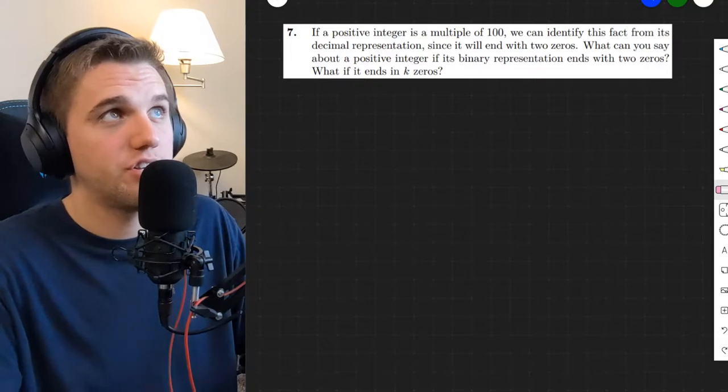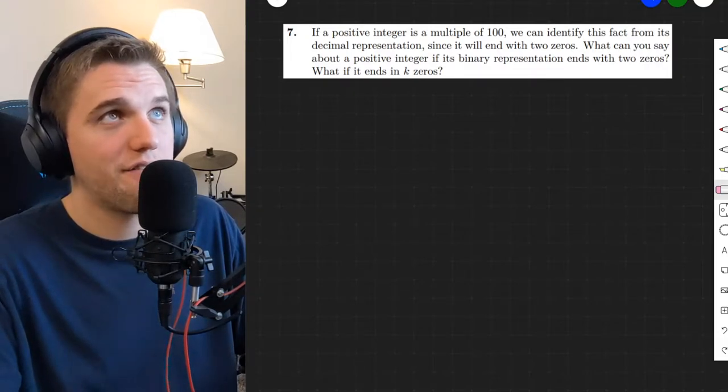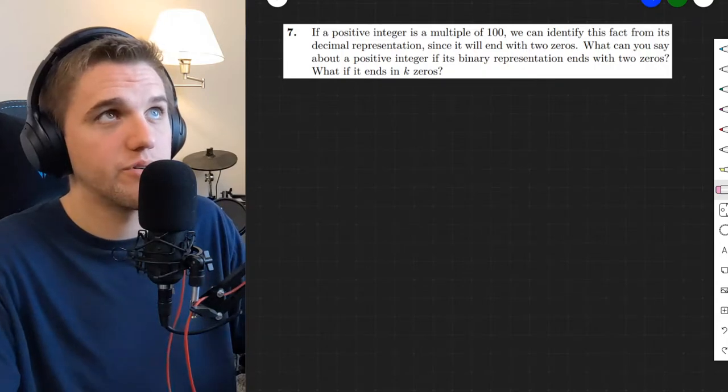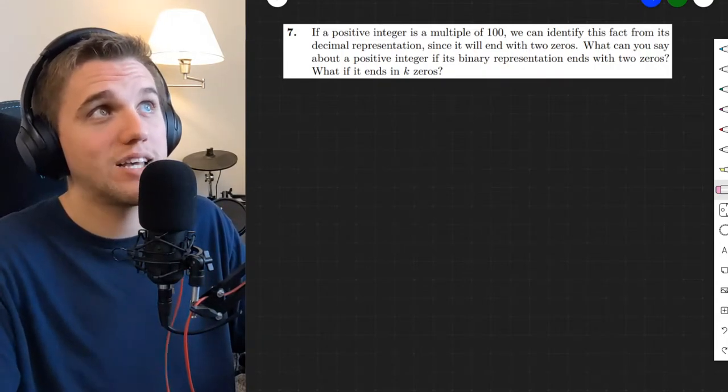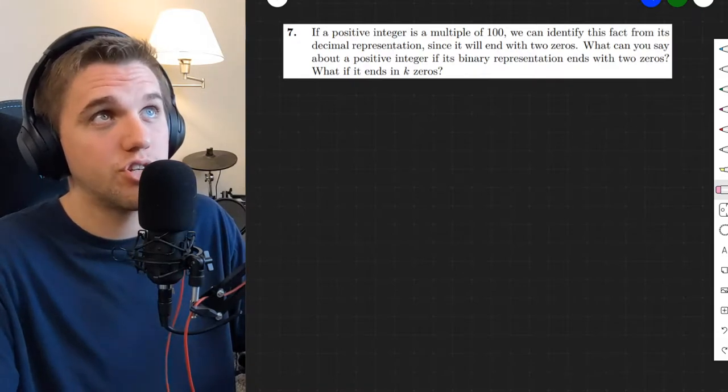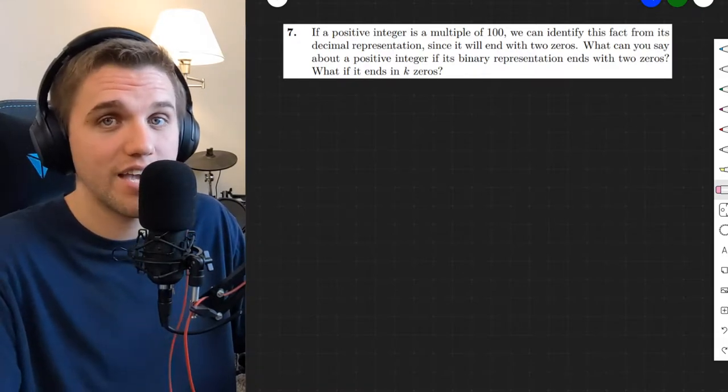This problem says that if a positive integer is a multiple of 100, we can identify this fact from its decimal representation, since it will end with two zeros. What can you say about a positive integer if its binary representation ends with two zeros? What if it ends in k zeros?